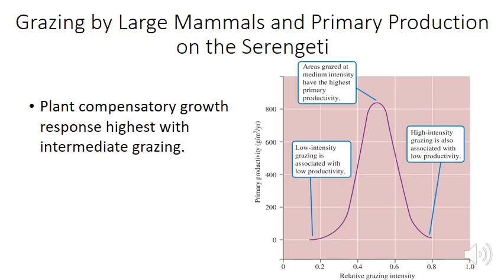This compensatory growth is likely due to several factors: grazers may remove less healthy material, exposing healthier tissue that can photosynthesize more efficiently, and reducing leaf area may improve water balance and lower respiration rates. McNaughton found that compensatory growth was highest at intermediate levels of grazing — at low levels there wasn't enough grazing to stimulate it, and at very high levels the damage was too severe for recovery. This means there is an intricate balance where the density of large grazers in the Serengeti has a huge impact on ecosystem primary productivity, with productivity reduced at both very low and very high grazer densities.